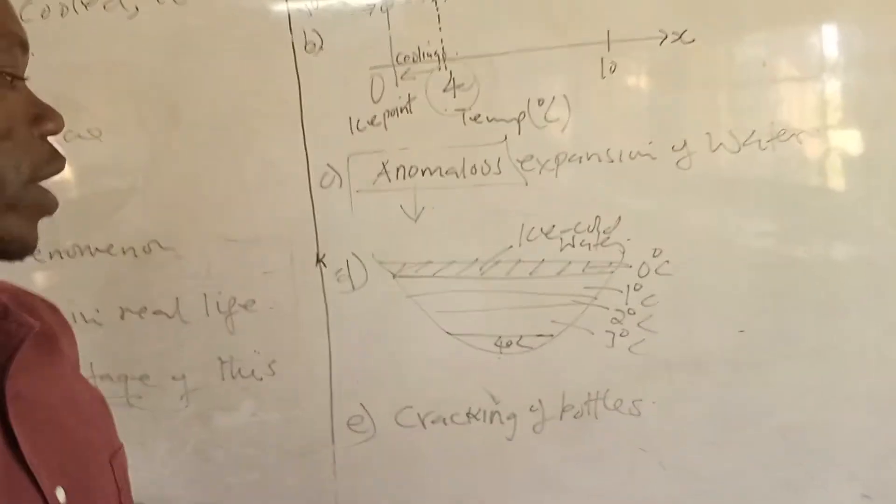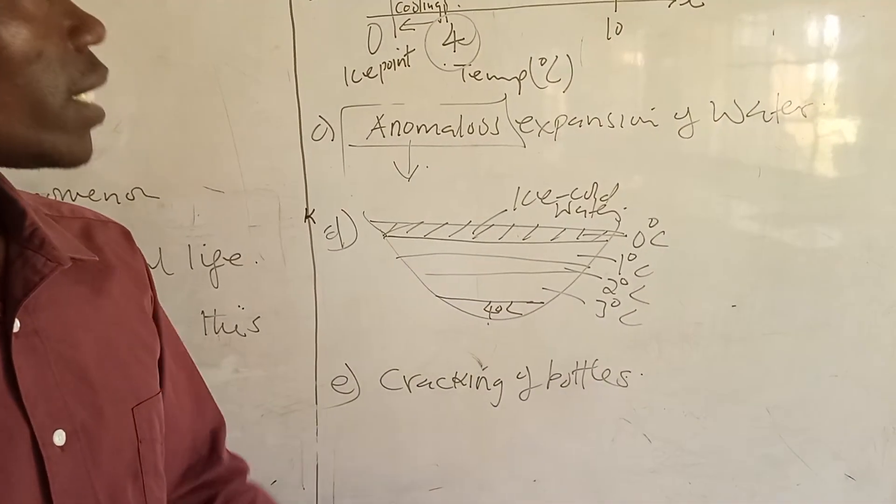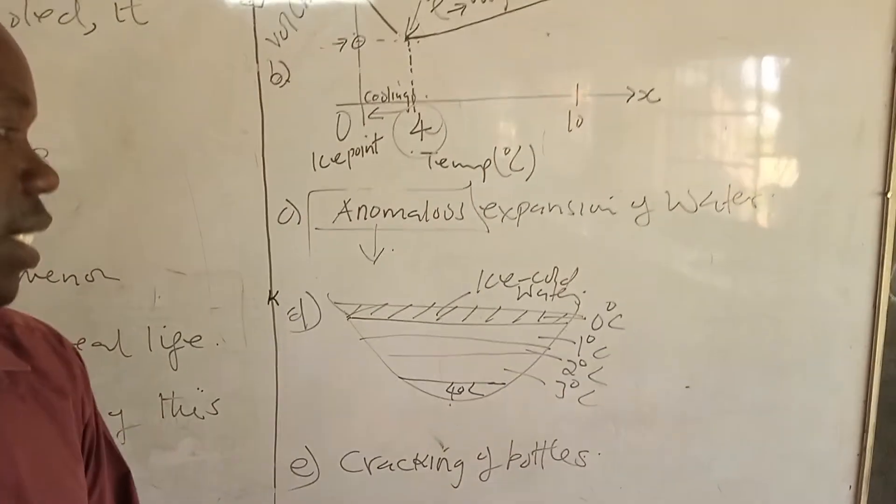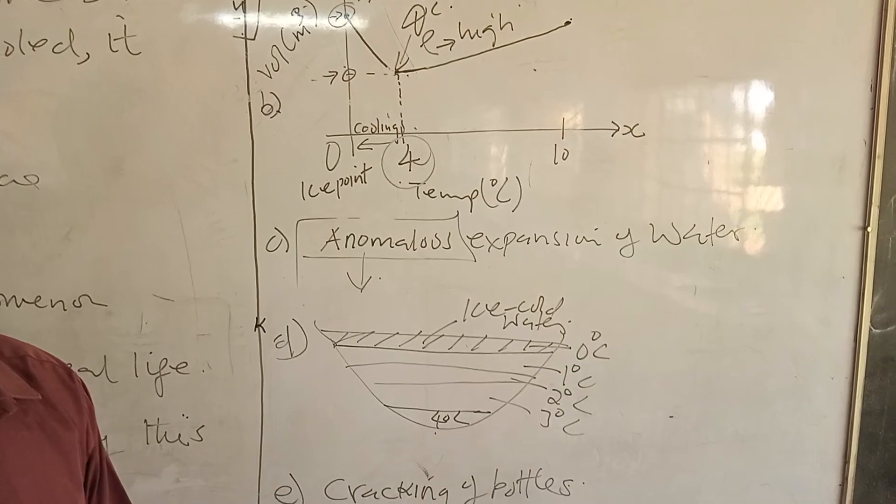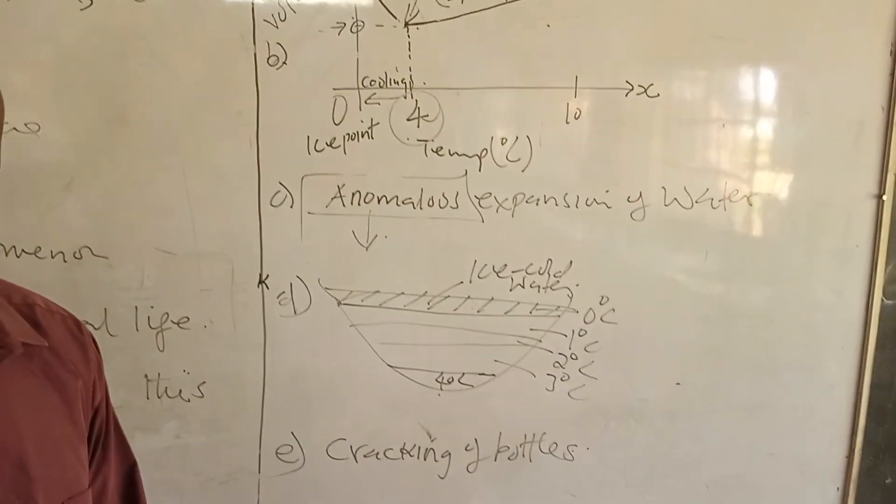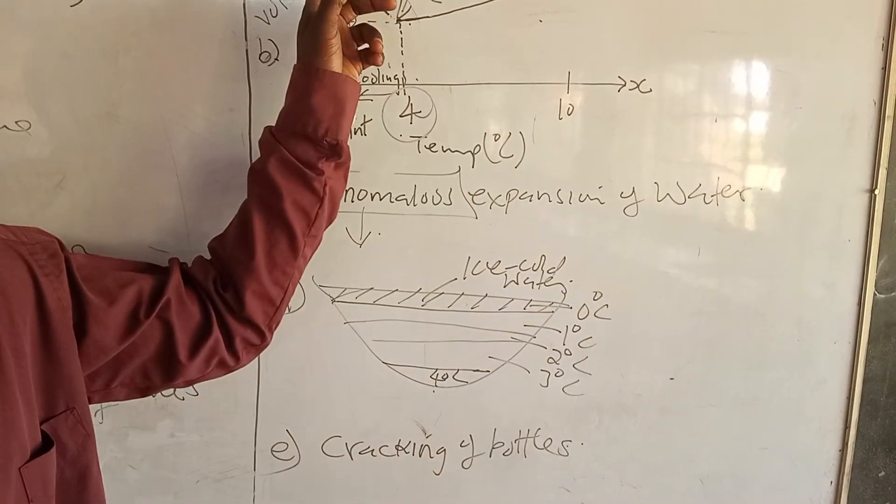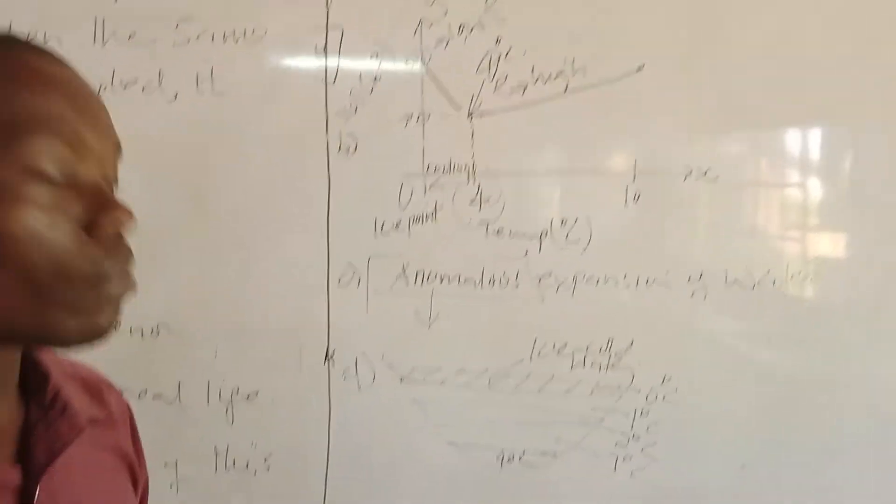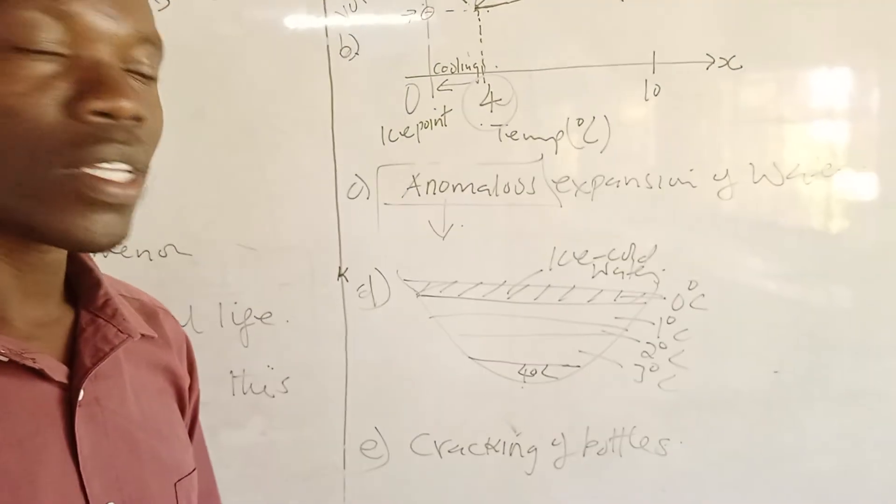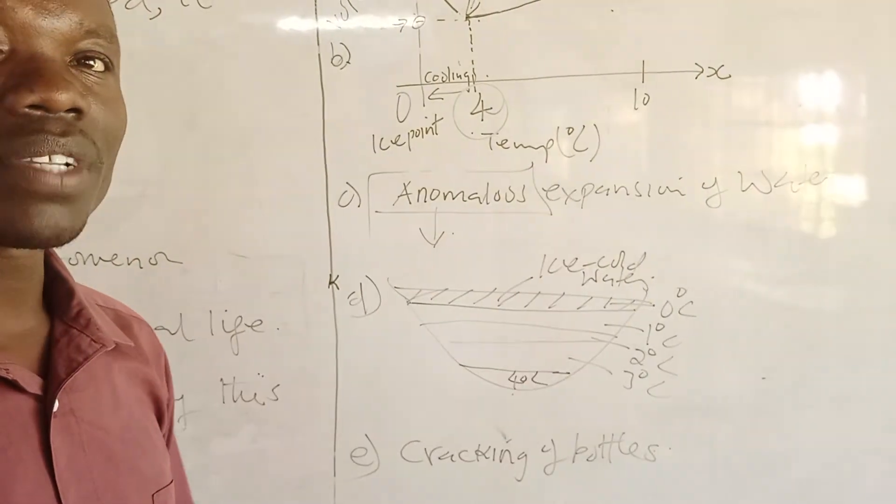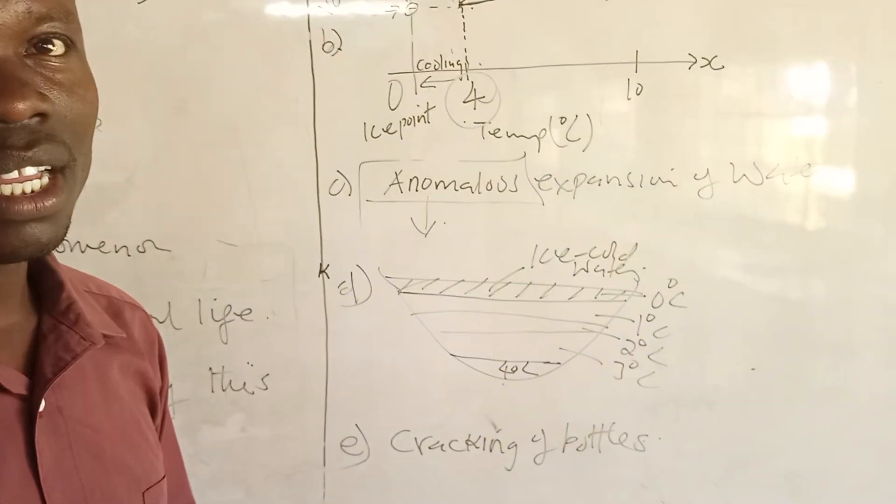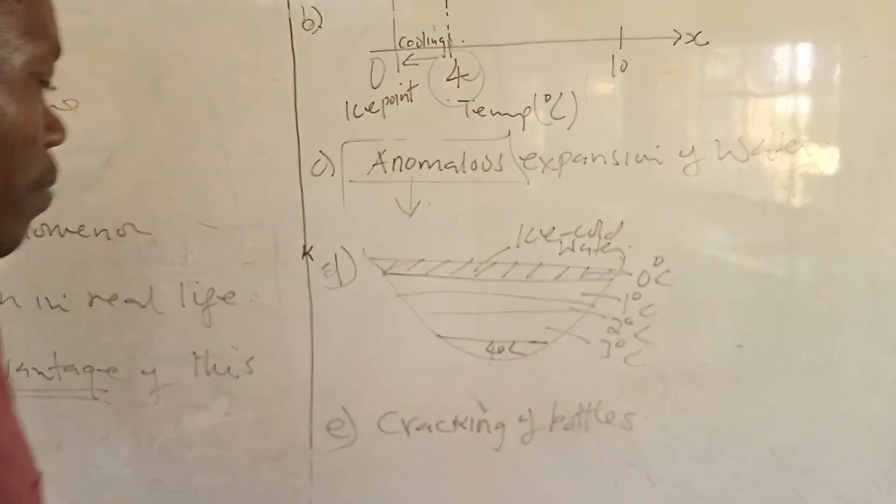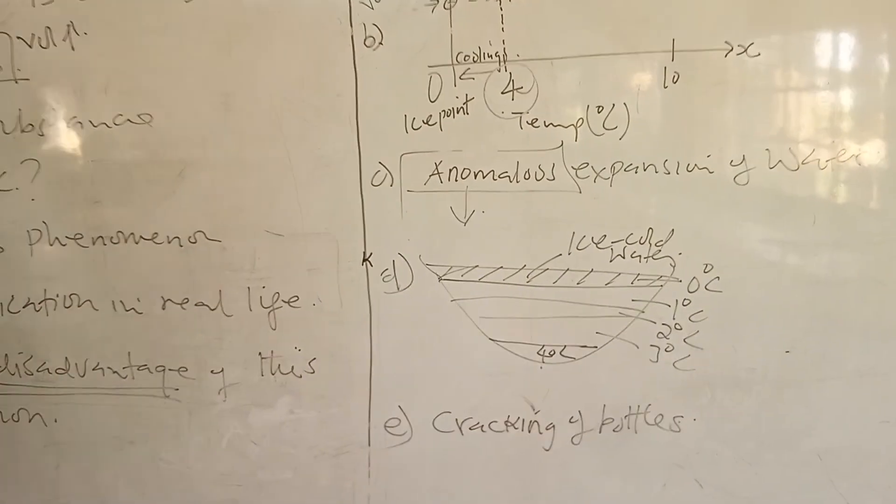Because when you turn the deep freezer to read a very low temperature of 0 degrees, and the soft drinks and water in the bottles inside that fridge will have cooled towards 0 degrees. Remember, they will expand. When the liquid expands, the size of the bottle remains the same. So, in that case, all the bottles in that fridge are likely to crack due to anomalous expansion of water. So, that's it for anomalous expansion of water. Thank you.